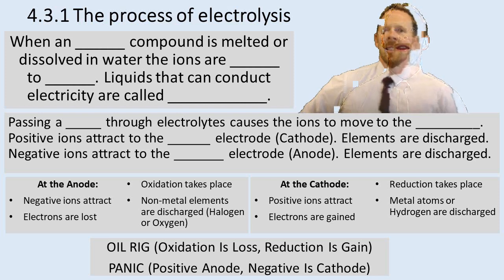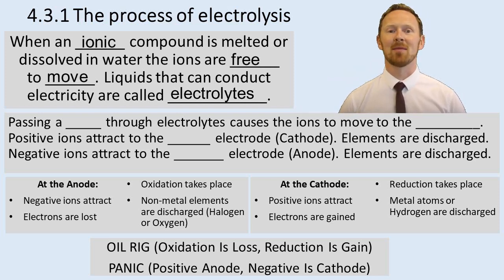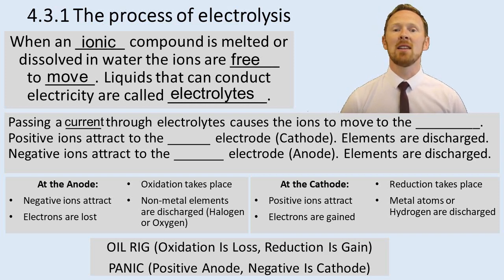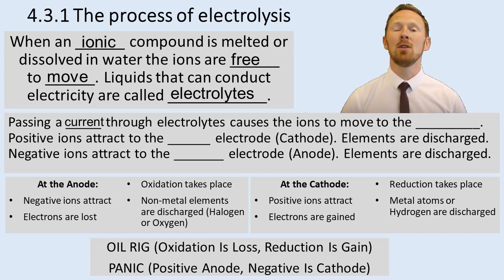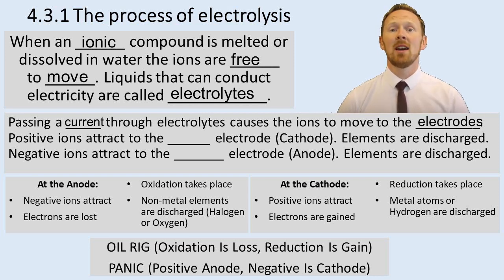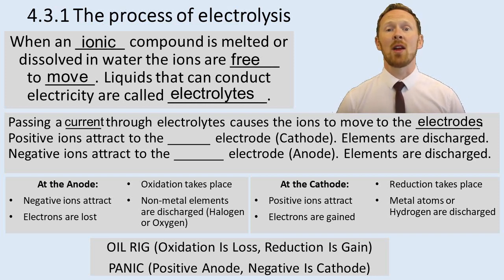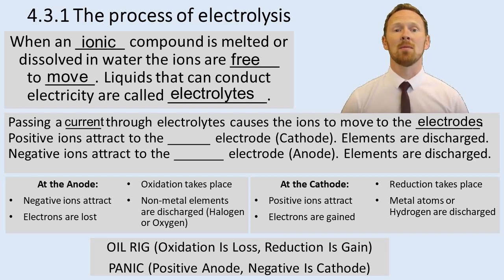Electrical current through electrolytes means they'll be able to conduct electricity. If you pass a current through electrolytes, it causes the ions to move to the electrodes. The electrolyte is the liquid. The electrodes are the solids — the positive and negative solids — that the electrolytes are attracted to.